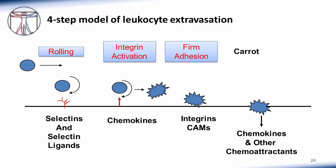Finally, once the cells are firmly attached, they are stimulated to transmigrate across the endothelium into the tissues by chemokines or other chemoattractant signals. This is the general four-step mechanism by which leukocytes move from the blood into tissues. The details will vary in specific instances, which we will discuss later.